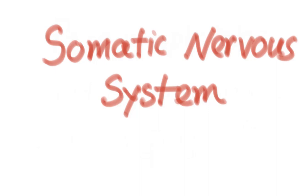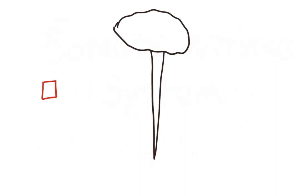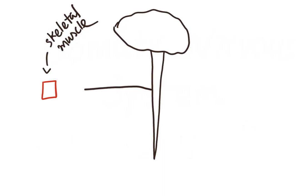Now that we have a basic understanding of the ANS, let us finish today's lecture by talking about the other division of the peripheral nervous system — the somatic nervous system. We have already learned that the somatic nervous system supplies the skeletal muscles. Another difference is that the nerve connecting the somatic nervous system and the skeletal muscle is a single neuron — there is no ganglia.